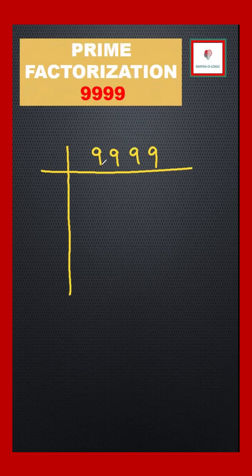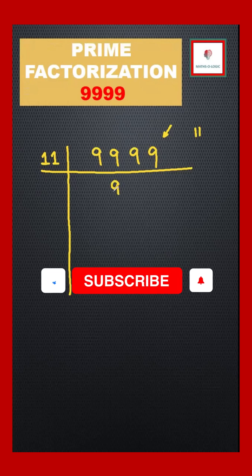Factorization of 9999 - that's four nines. We'll start by dividing this number by 11. So 11 times 9 is 99.